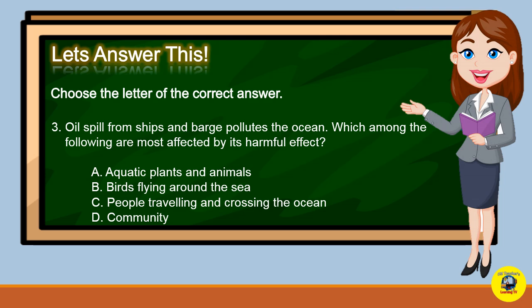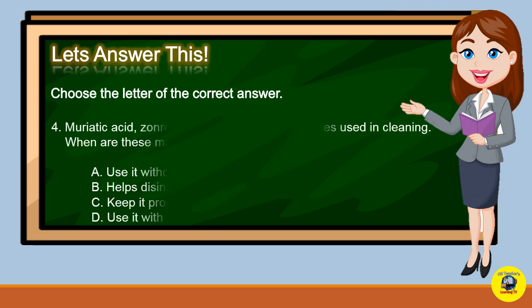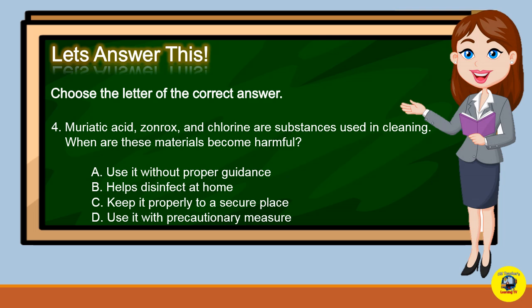Number 3: Oil spill from ships and barges pollutes the ocean. Which among the following are most affected by this harmful effect? A. Aquatic plants and animals. B. Birds flying around the sea. C. People traveling and crossing the ocean. Or D. The community. What is your answer?